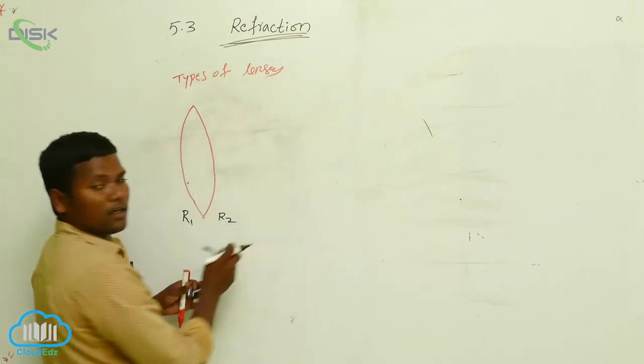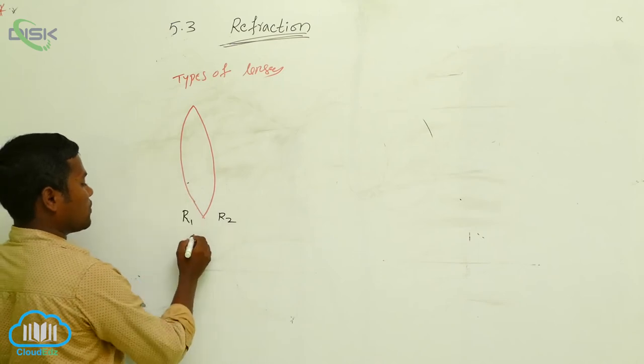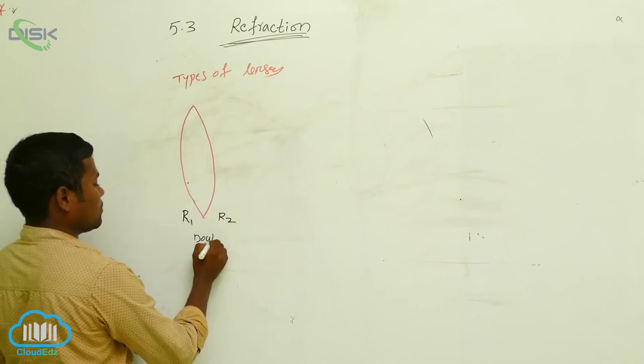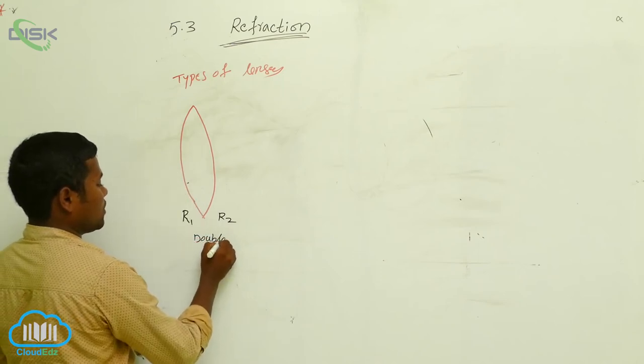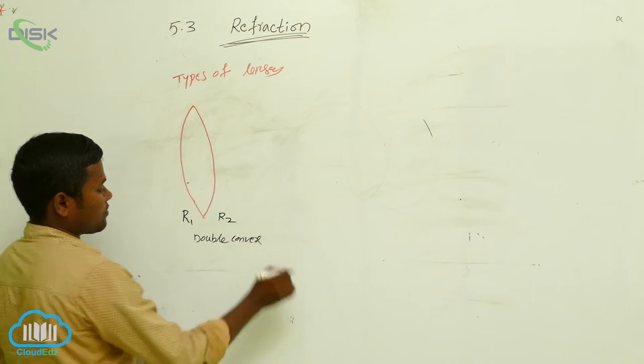See how many curves are there here — two curves are there, that's why we call it double. Double convex.